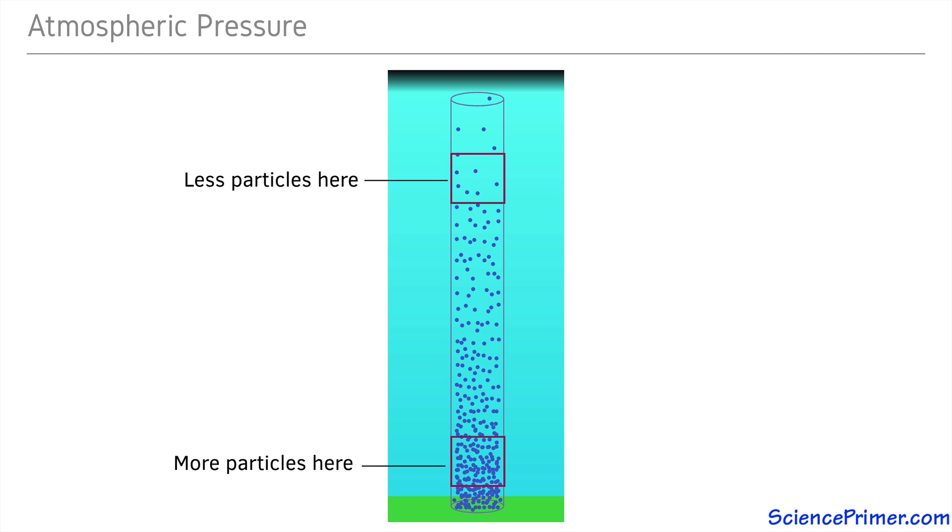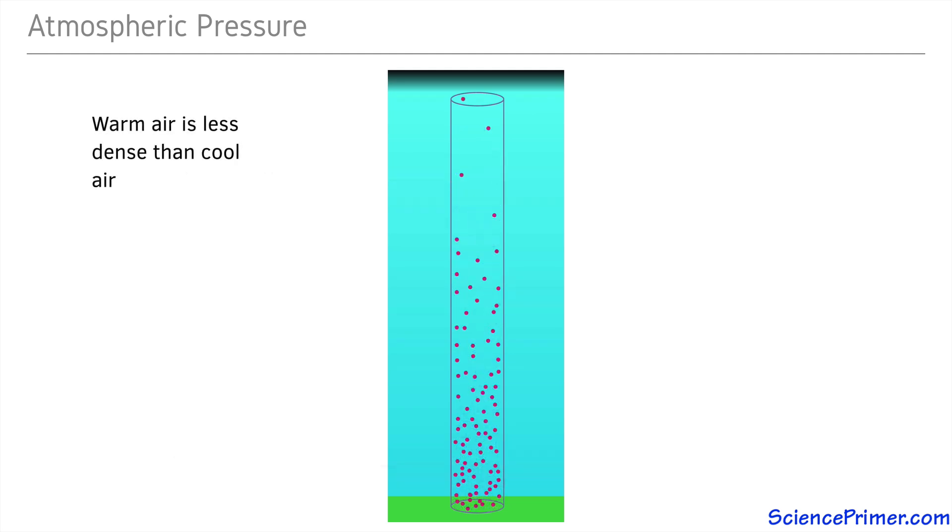As individual gas particles warm, they take up more space, causing the gas to be less dense. Water vapor also decreases the density of air, so increasing water vapor in the atmosphere decreases atmospheric pressure.